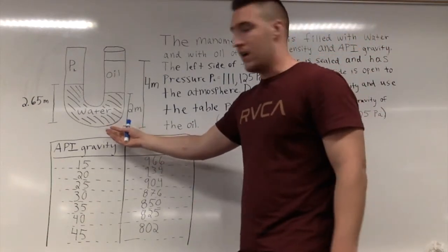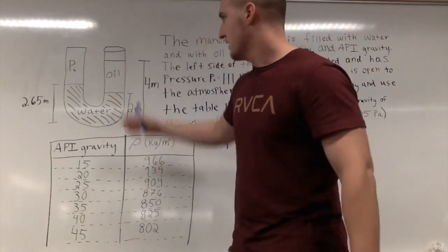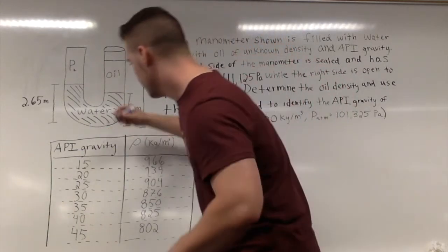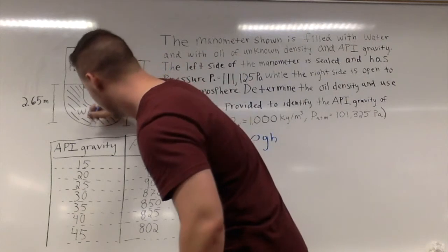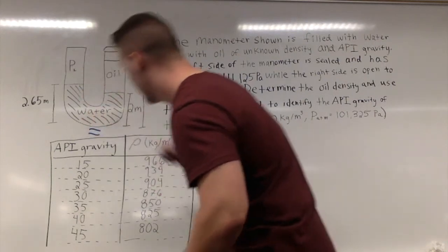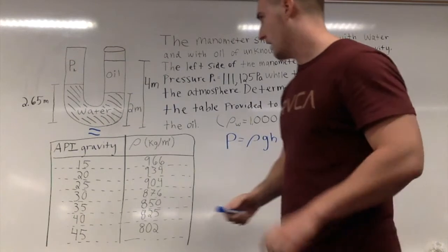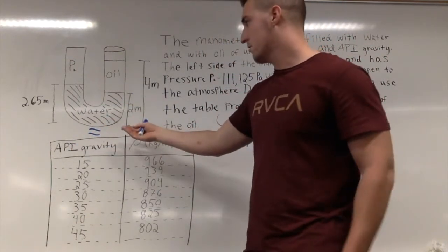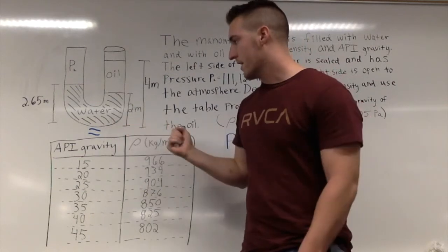Another thing I like to look at is when I see a manometer, I think of the bottom of the manometer as an equal sign. The reason I think of it that way is because the pressure on the left-hand side has to be equal to the pressure on the right-hand side.